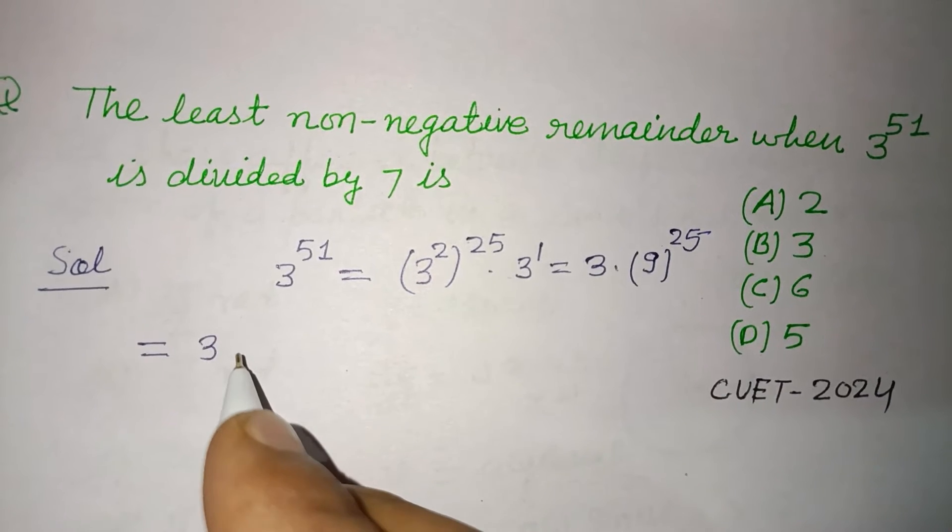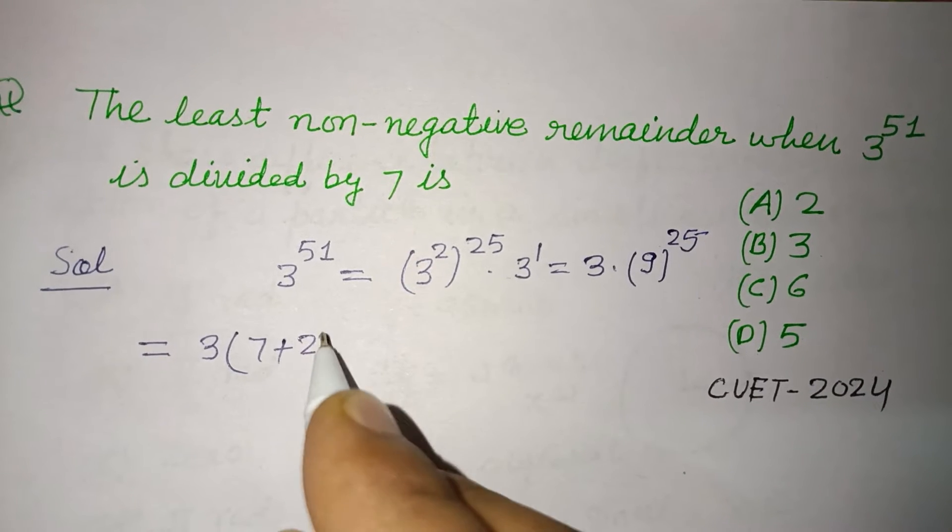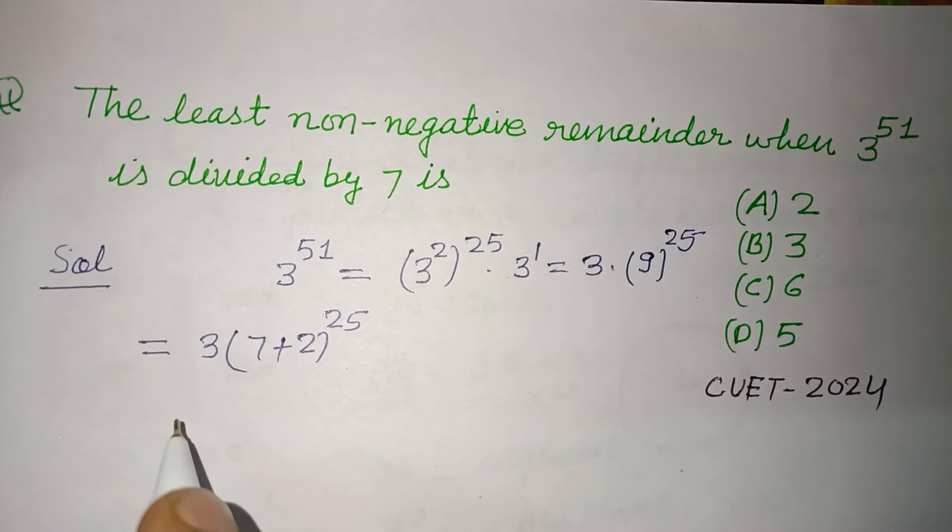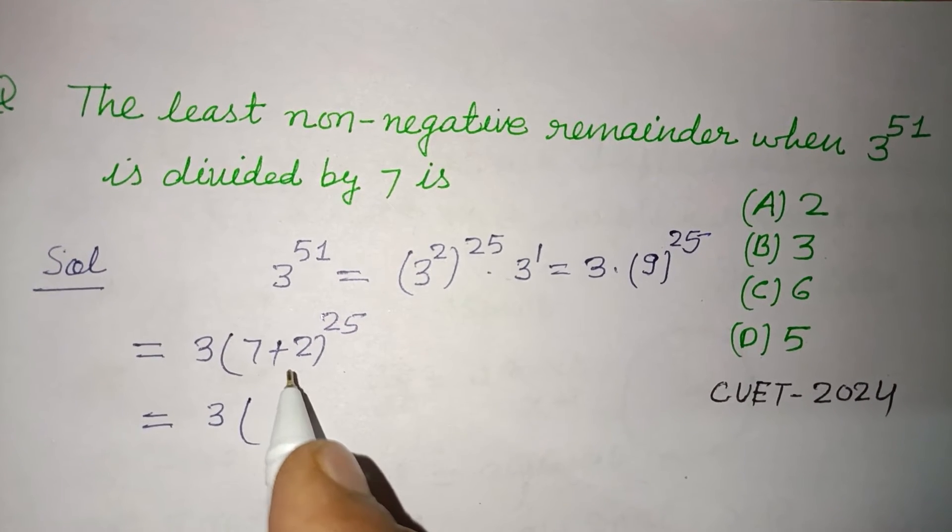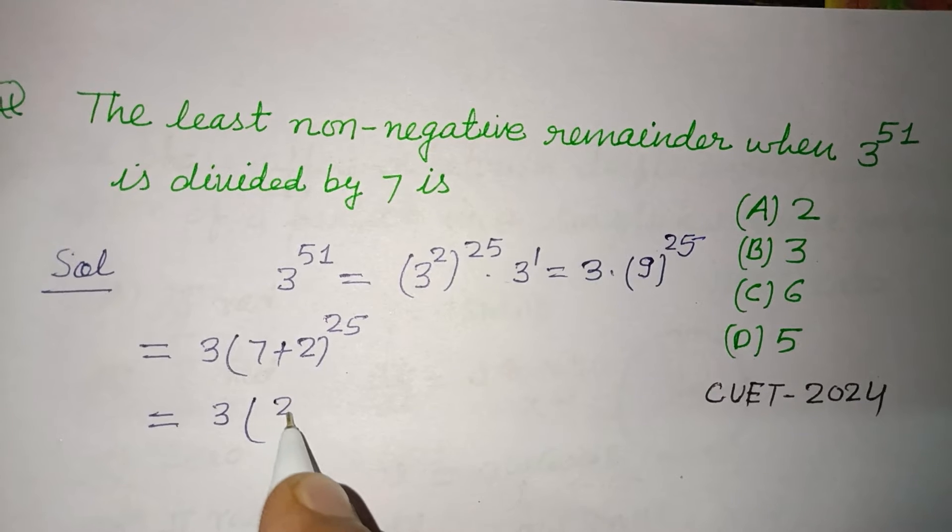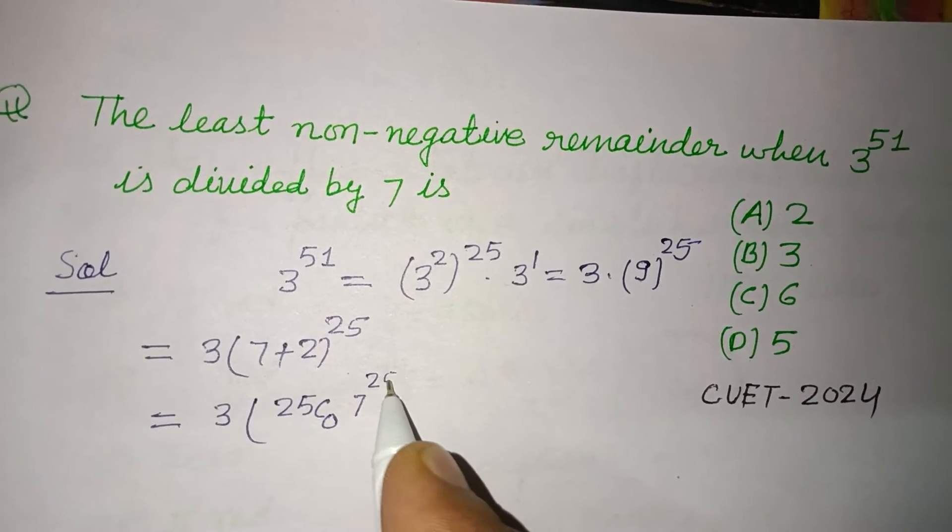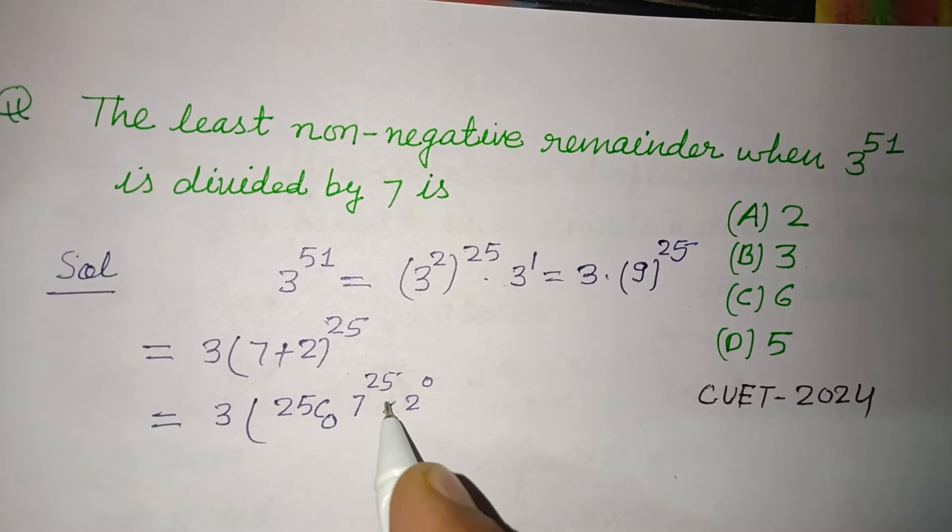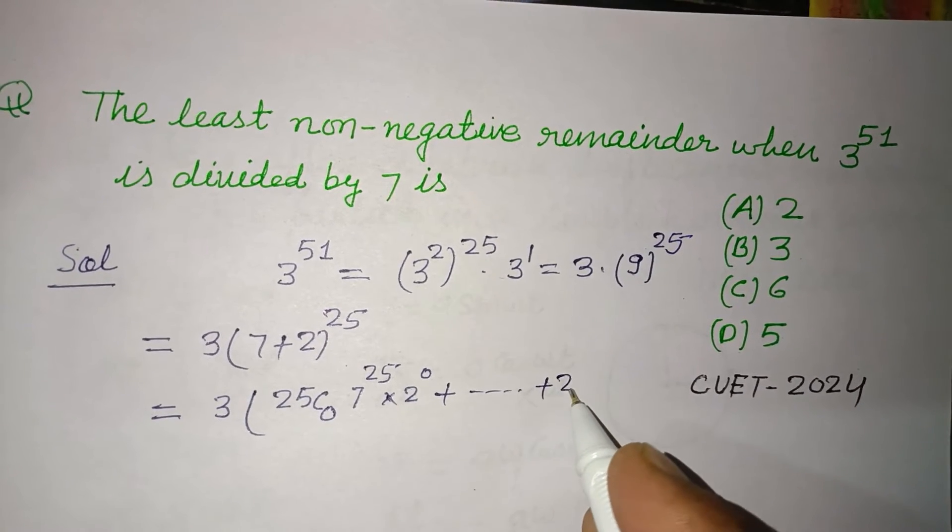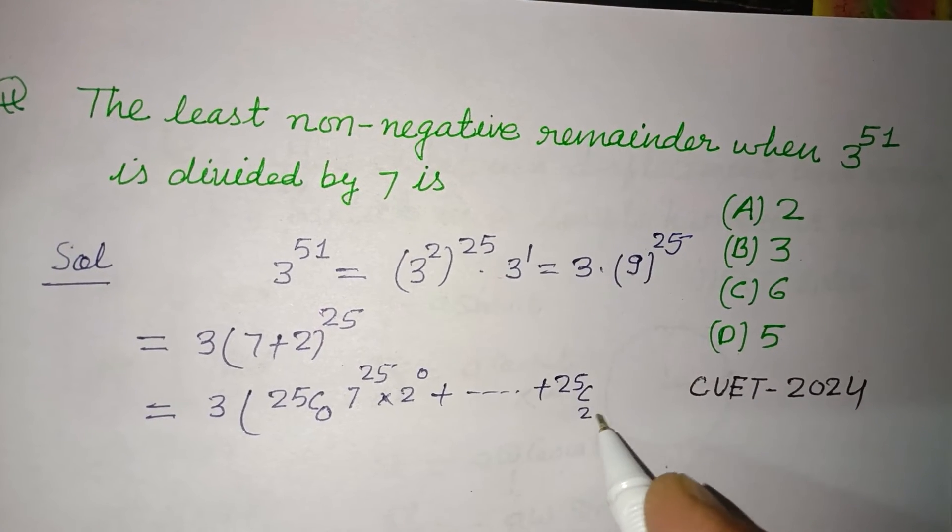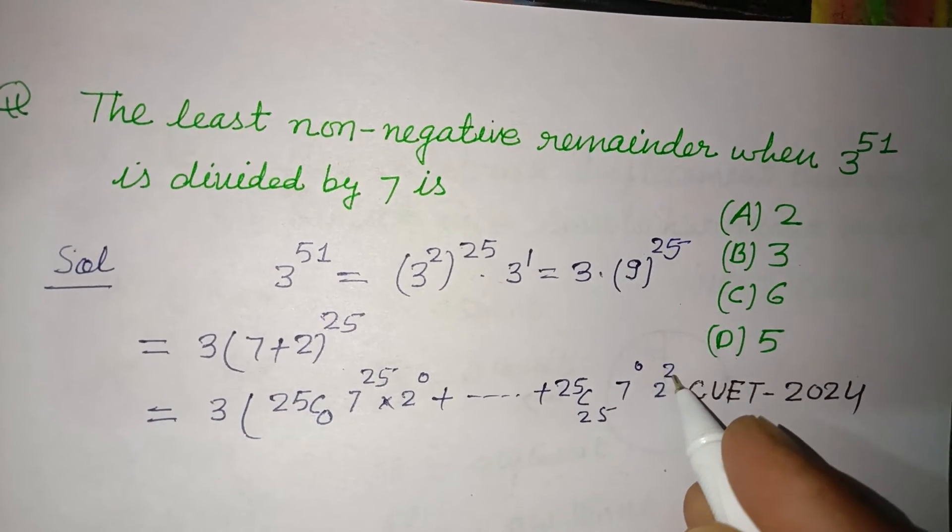This equals 3 times (7+2)^25. Now we expand it using the binomial theorem, which gives us 25C0 times 7^25 times 2^0 plus and so on, up to 25C25 times 7^0 times 2^25.